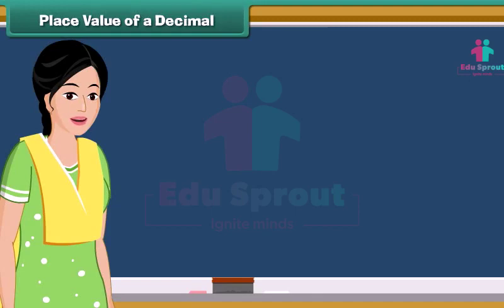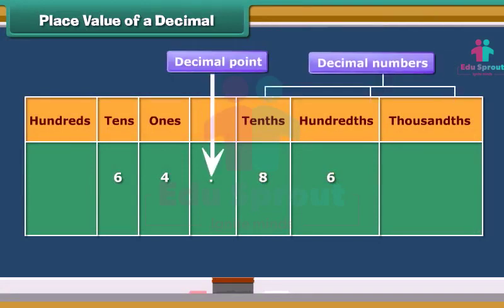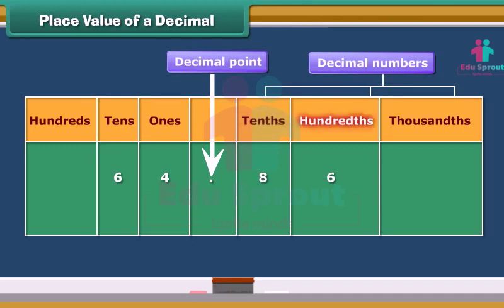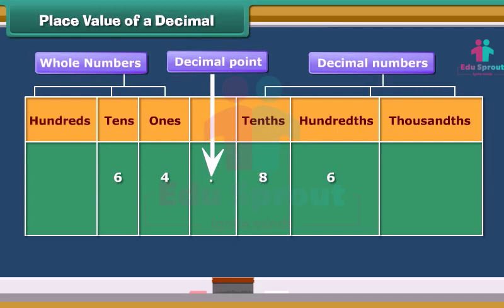Writing the decimals is pretty easy. Numbers to the right of the decimal point are decimals; the place values are tenths, hundredths, thousandths and so on. Whereas numbers to the left of the decimal point are whole numbers; the place values are ones, tens, hundreds and so on. Therefore, we read this number as 64 and 86 hundredths.